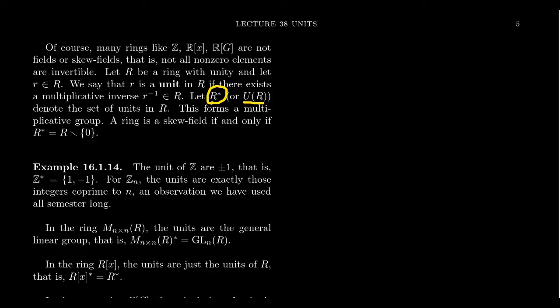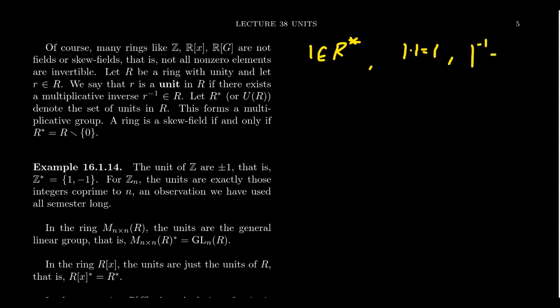The set of units inside of a ring forms a group, which is necessarily a multiplicative group. Clearly one is a unit — one belongs to R-star — because one times one equals one, so it has an inverse: the inverse of one is itself one.